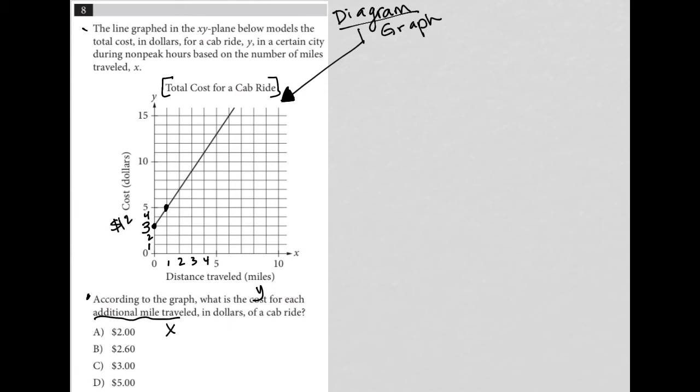And just to make sure that we're right, from one mile to two miles, we go from five up to $7. That's an additional $2. So it looks like the cost, what is the cost for each additional mile traveled, it looks like that cost is $2, according to the graph. So answer choice A is the correct answer.